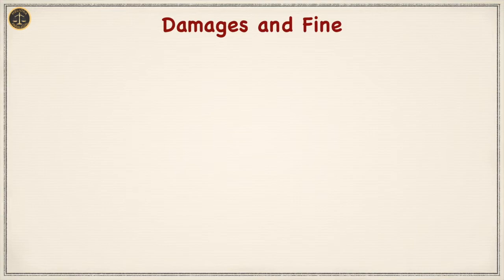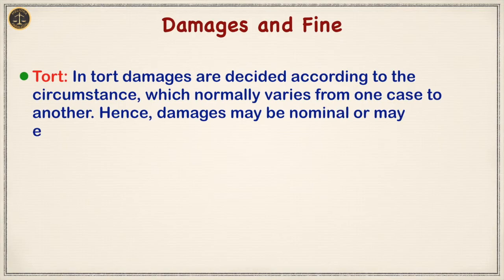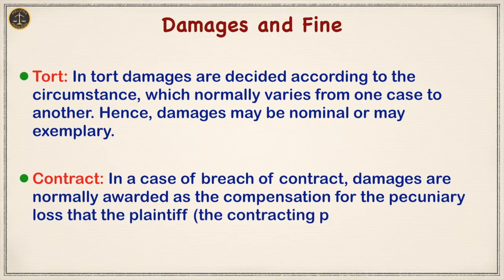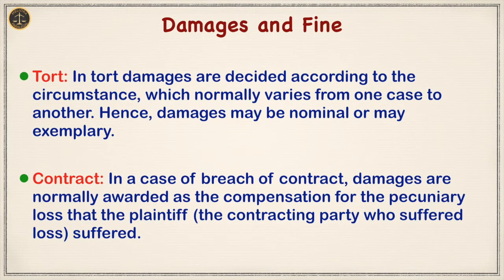Next, that is damages and fine. In tort, damages are decided according to the circumstance, which normally varies from one case to another. Hence, damages may be nominal or exemplary. On the other hand, in case of breach of contract, damages are normally awarded as compensation for the pecuniary loss that the plaintiff — the contracting party who suffered loss — suffered.